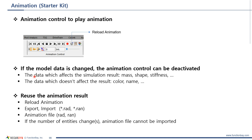The data which affects the simulation are mass, shape, and stiffness. The data which doesn't affect the result includes color, name, and so on. You can import the existing animation data, and you can also use the reload animation button here.